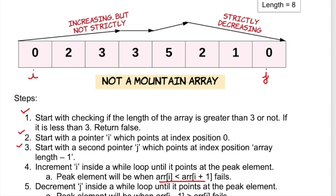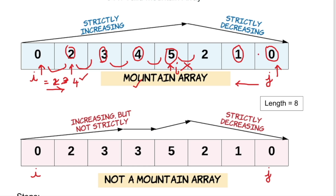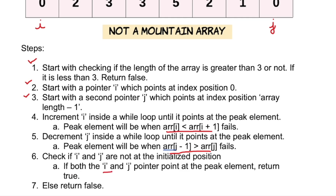Now for pointer j — starting at index 7, we check if arr[j-1] > arr[j]: 1 > 0, so decrement j. Then 2 > 1, so decrement j. Now j is pointing at index 4. The next condition fails, so j stops at index 4. Both i and j are now pointing at index 4, the peak element.